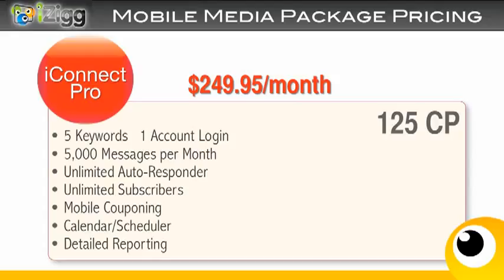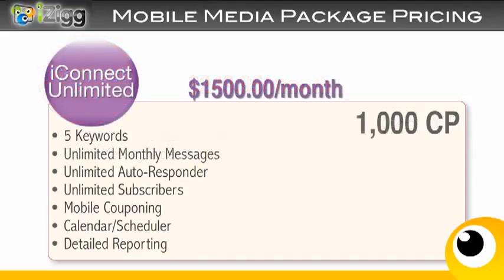The iConnect Pro is $249.95 a month and has all of the features of the Connect package with 125 in customer point volume. It includes five keywords and 5,000 messages per month in any variation of different groups and campaigns you might blast out in any given month. It also includes the unlimited autoresponder and subscribers, mobile couponing, the calendar scheduler, and detailed reporting.